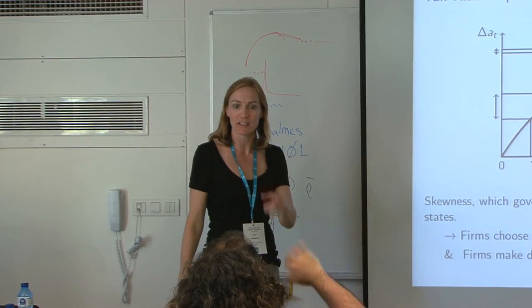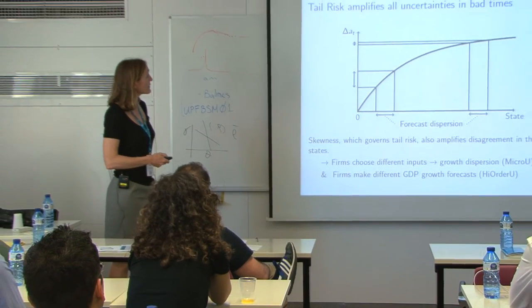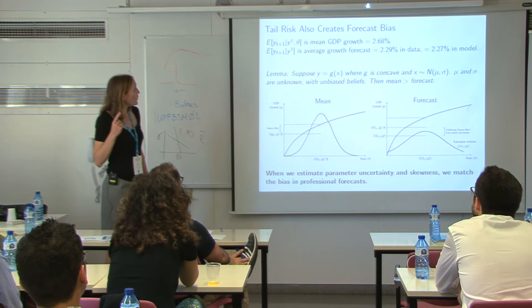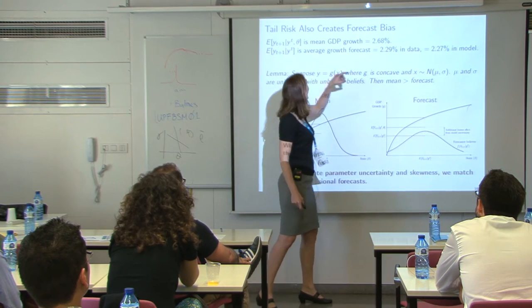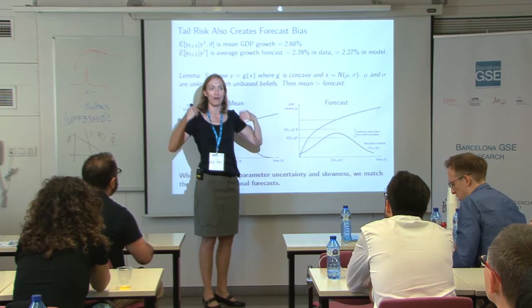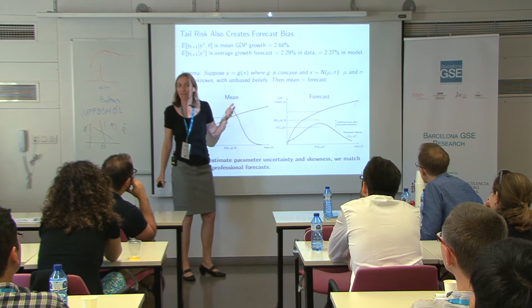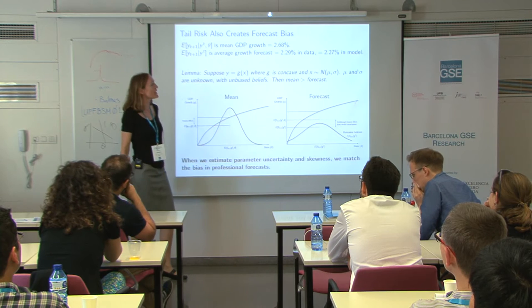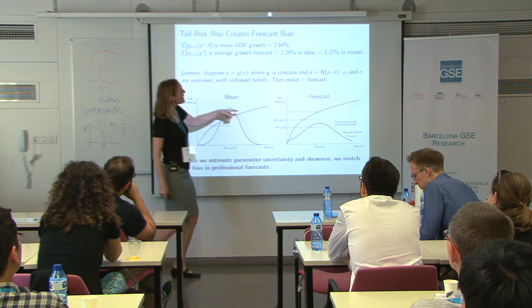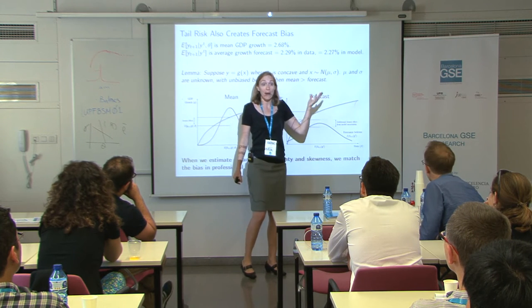This also creates forecast bias, which is something we were discussing this morning. The mean GDP growth in our sample is 2.68%, but the mean forecast is 2.29% — about half a percent lower than the true growth rate. These are professional forecasters, and they're half a percent off on a variable that's only two and a half percent. Most models say they have screwed-up incentives, but our model actually nails the forecast bias — agents like robust control agents have downward biased forecasts.